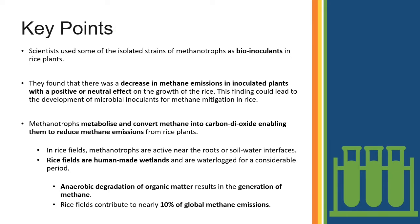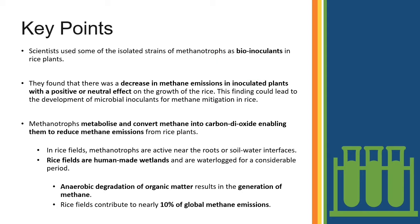Scientists used some of the isolated strains of methanotropes as bio-inoculants. The key points to note for our upcoming prelims: they found a decrease in methane emission in inoculated plants, with a positive or neutral effect on the growth of rice. This finding could lead to the development of microbial inoculants for methane mitigation in rice fields.